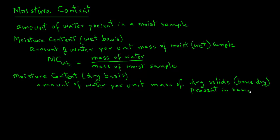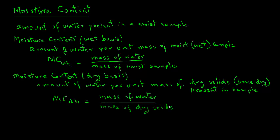Mathematically, we can express moisture content dB — we will use subscript dB for dry basis — equals mass of water divided by mass of dry solids.